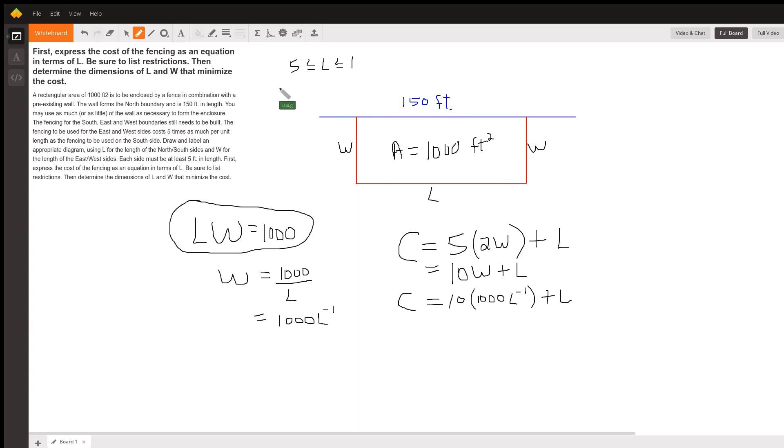So W has to be greater than or equal to five. W is greater than or equal to five. We have to use at least 10 feet for W, so that would leave 140 feet at the most for L.